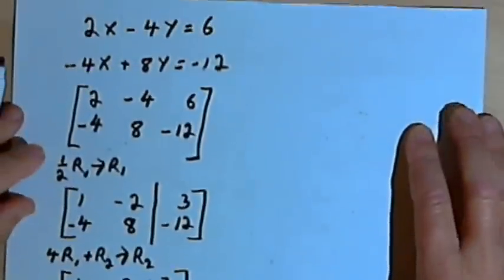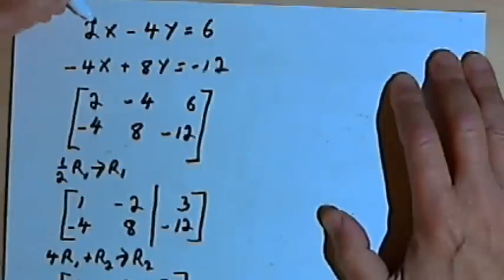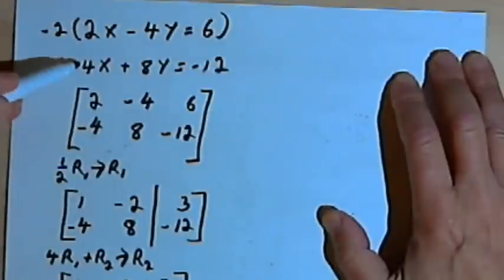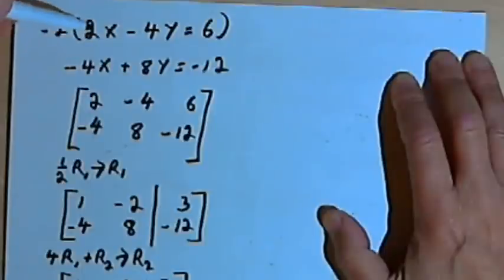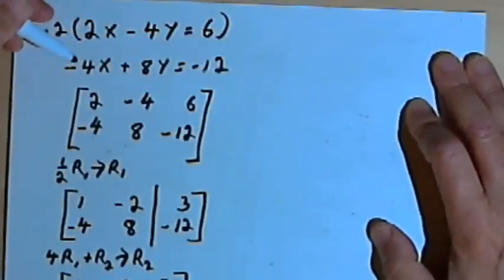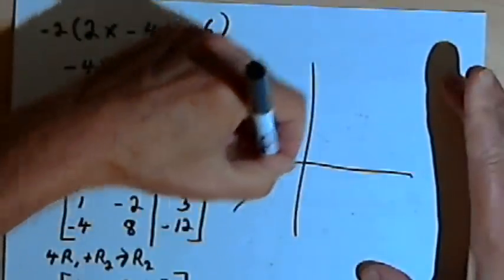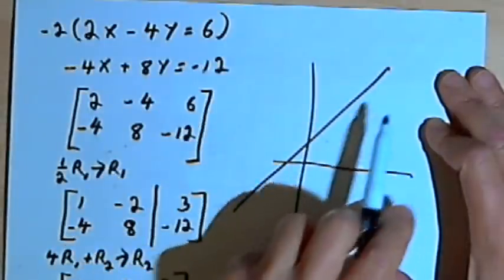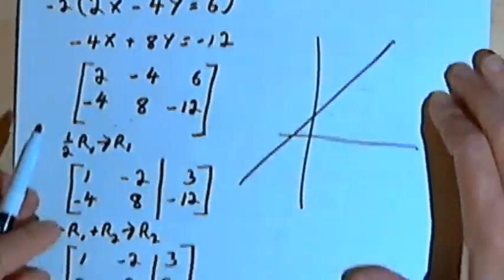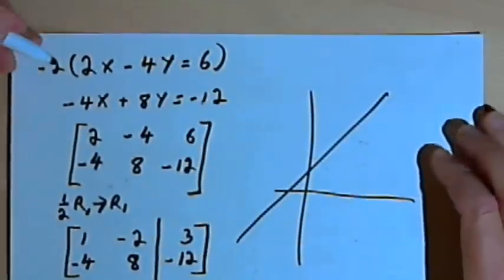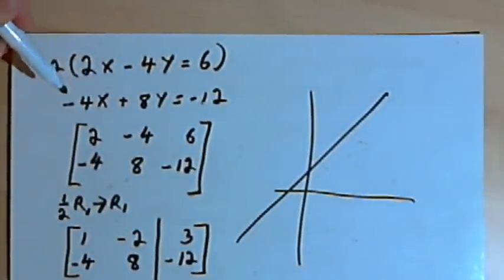Here's why that happened. Going back to the original system of equations, the second equation is really just negative 2 times the first equation — multiply the first equation by negative 2 and you get the second. When this happens, we say we've got a dependent system of equations. In other words, we've really only got one equation, the graph is just one line, and there's an infinite number of solutions for that line. So when you end up with a matrix that has all zeros in the bottom row, that's telling you it's a dependent system with an infinite number of solutions.